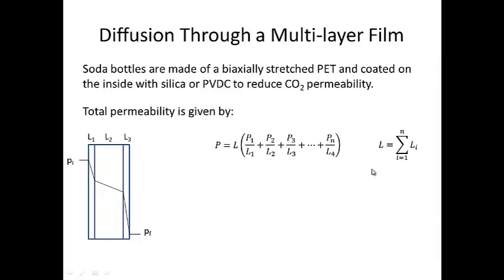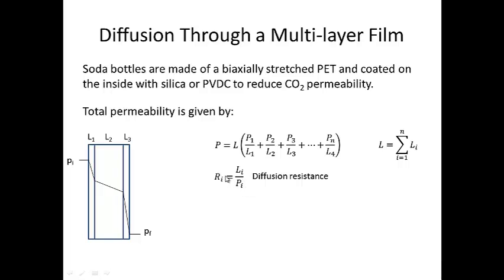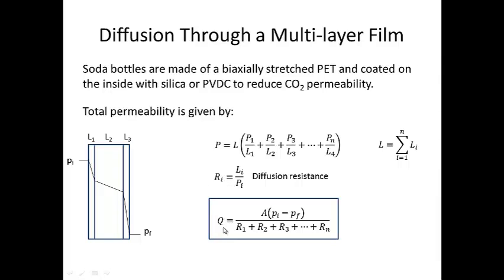Keep in mind also that the total length L is equal to the sum of the individual lengths of each multi-layered film. We can now calculate something called the resistance, or the diffusion resistance, of each layer of polymer film, R sub i. That's simply equal to the length of each polymer film divided by the permeability of that film. In other words, a thicker section of polymer will have higher resistance simply because it takes more time for a molecule to diffuse across that longer thickness. In addition, if I have a low permeability polymer — a polymer that resists the permeability of a molecule through its thickness — I'll tend to have a higher resistance, which also makes sense intuitively.